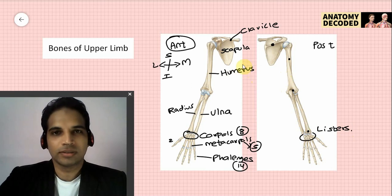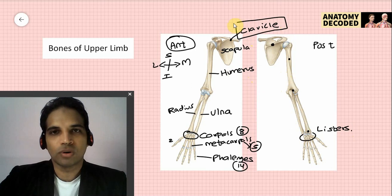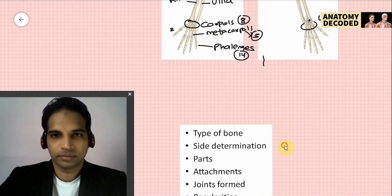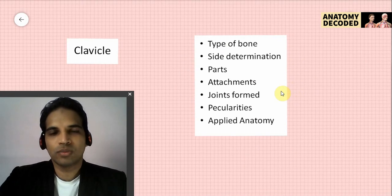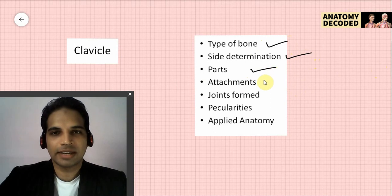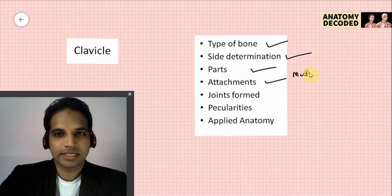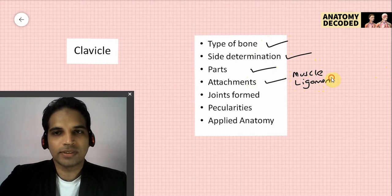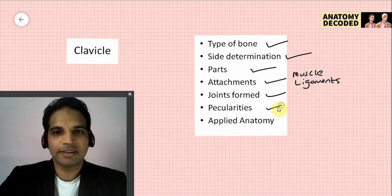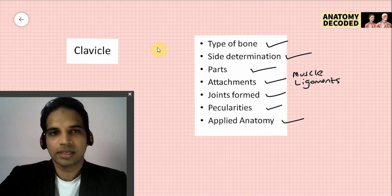Now let's begin with the clavicle proper. We will learn it under the following headings: first, which type of bone it is; then side determination; then parts of the clavicle; then attachments — both muscle attachments and ligament attachments; then joints formed by the clavicle; certain peculiarities of the clavicle; and lastly the applied anatomy related to it.